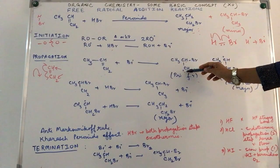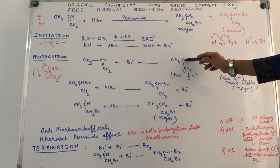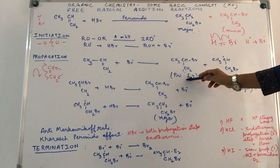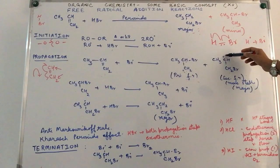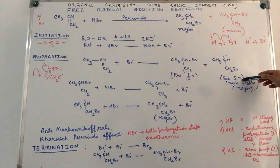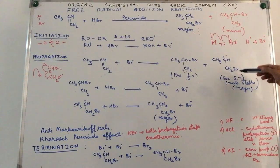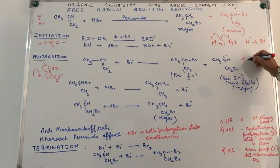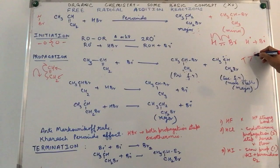Carbon which has the unpaired electron is attached to only one other carbon directly. It's a primary free radical. Carbon which has the unpaired electron is attached to two other carbon atoms. It's a secondary free radical.